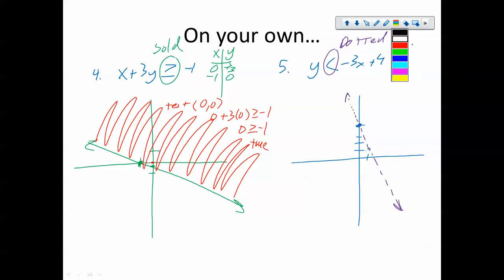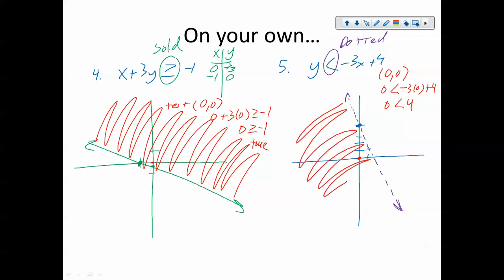And then let's test. Again, I'm going to test zero, zero. As long as zero, zero isn't on the line, that's always the one I test because it's the easiest one to do. So that zero is less than four. True statement? True statement. So I shade in this side.